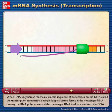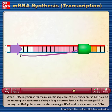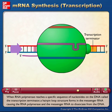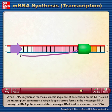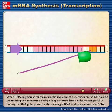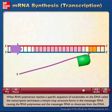When RNA polymerase reaches a specific sequence of nucleotides on the DNA, called the transcription terminator, a hairpin loop structure forms in the messenger RNA, causing the RNA polymerase and the messenger RNA to dissociate from the DNA.